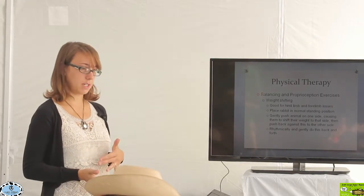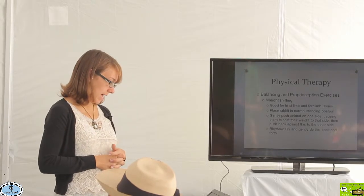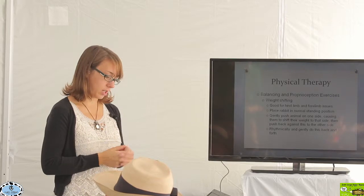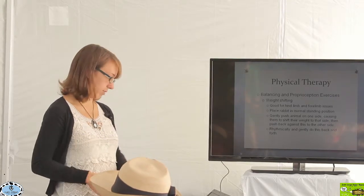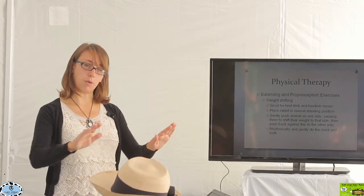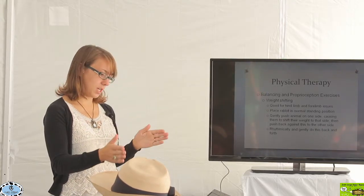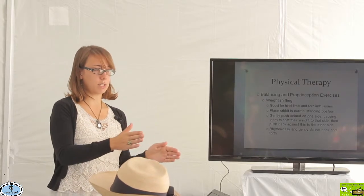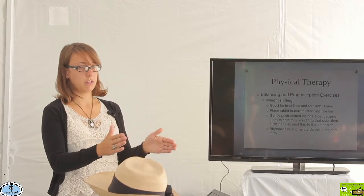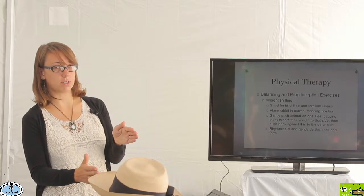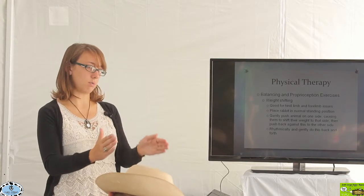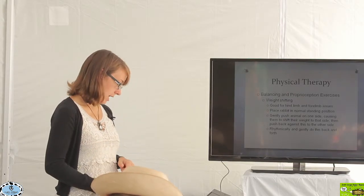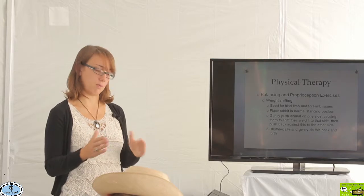Okay, so weight shifting is another exercise that can be done. It's good for both hind and forelimb issues. You're going to gently place the rabbit in a normal standing position. Make sure those limbs are where they should be. And then gently push the rabbit from side to side so that we're forcing it to put more weight on one side for a moment and then shifting it to the other side, forcing it to put more weight on the other side. Just doing sort of gentle rocking back and forth, making them put more or less weight and doing it sort of more of this rhythmic kind of movement for them.